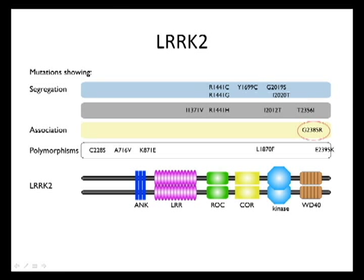As well as the ones that show fairly clear inheritance, there are some risk factors that show association, which is the third bar down. The one I've highlighted, G2385R, is a risk factor that about doubles your lifetime risk of Parkinson's disease, particularly in Asian populations.